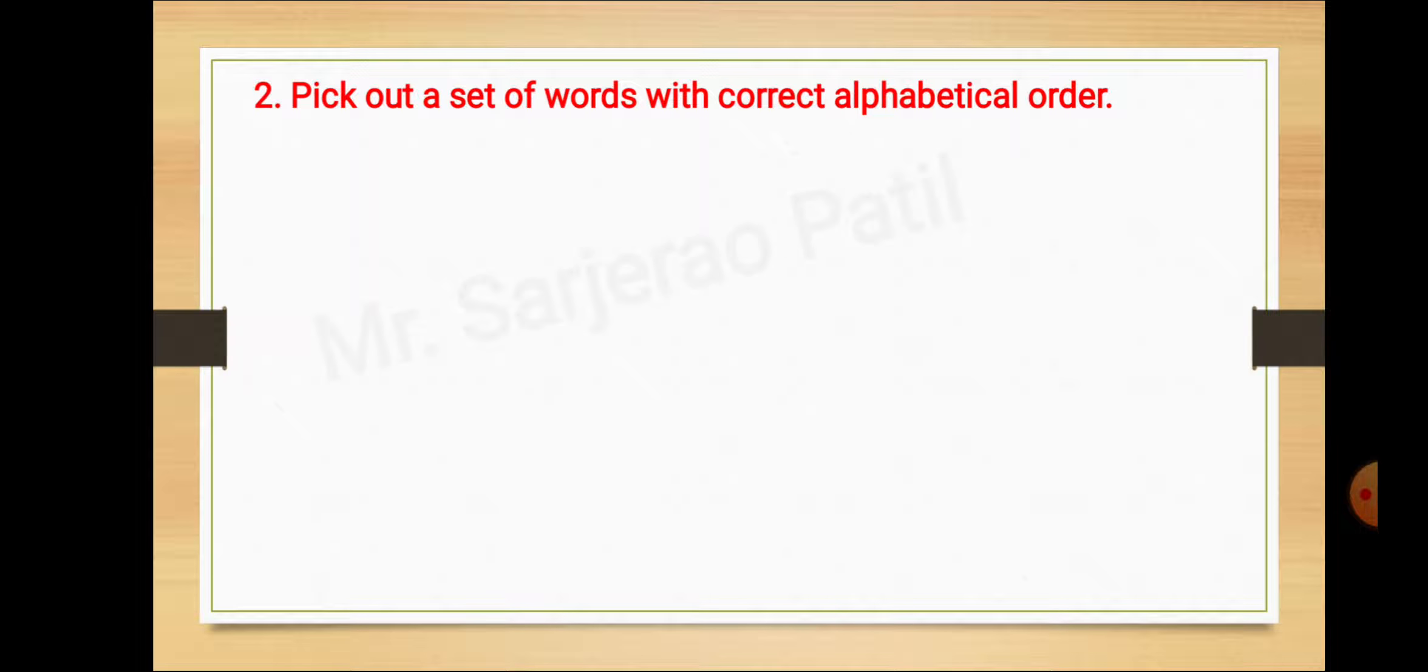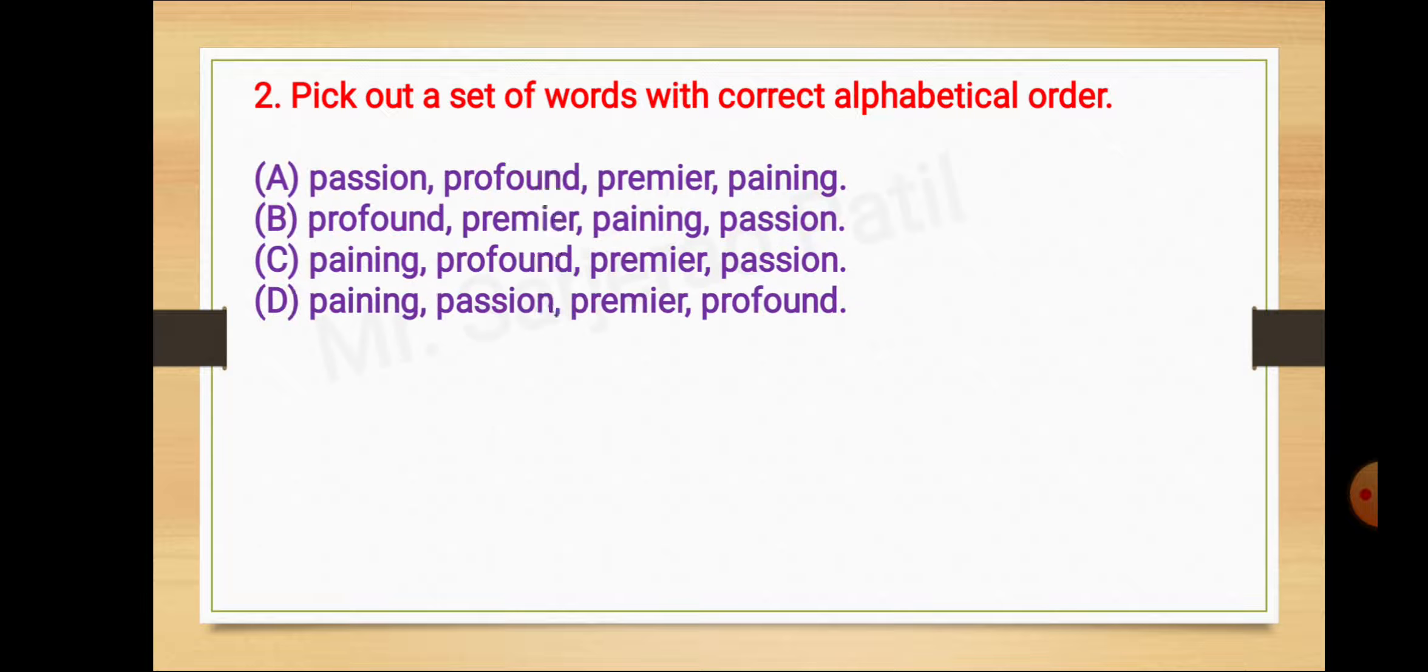Question number two: pick out the set of words with correct alphabetical order. Here four sets of words are given in alternatives A, B, C, and D. In these, words are arranged in different orders, and you need to arrange them in proper alphabetical sequence. This language study activity carries two marks. In this, there are 4 words starting with the same first letter. When 4 words start with the same first letter, then you have to look at the second letter, and if needed the third letter as well. This is how you solve this activity. Now in this the correct alternative is painting, passion, premier and profound.